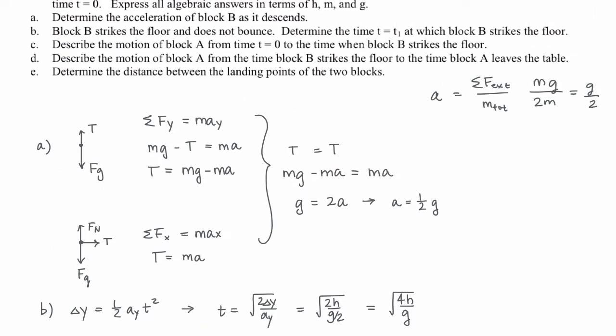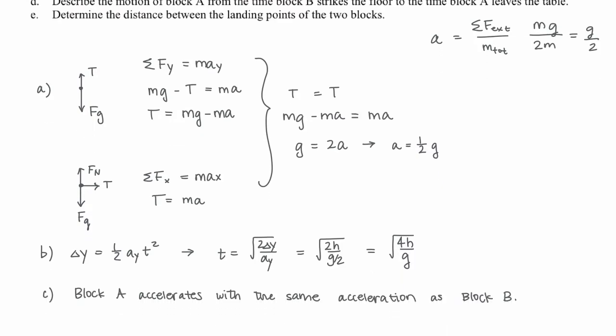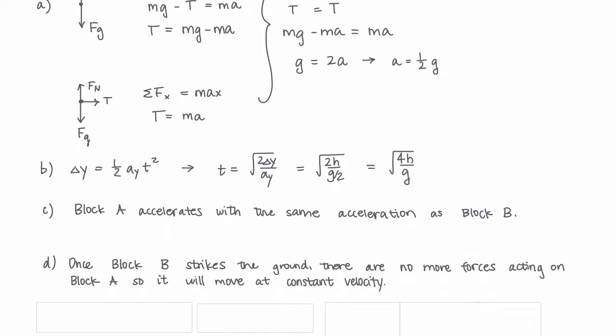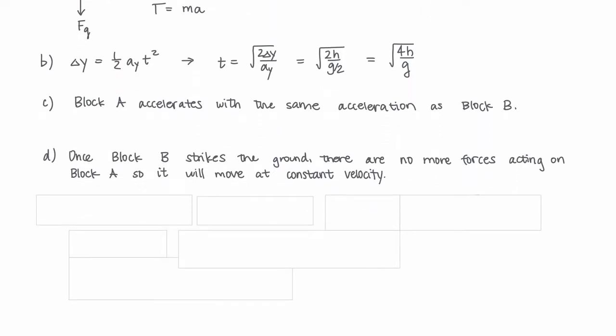Part E: Determine the distance between the landing points of the two blocks. From part D, block A keeps moving at constant velocity after block B hits the ground. To calculate the distance it lands from the table, we need to know that velocity using a kinematics equation with acceleration, time, and velocity.